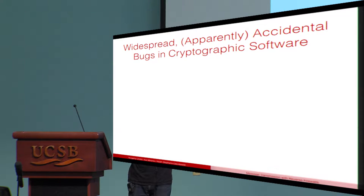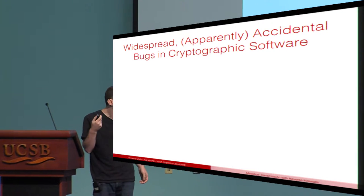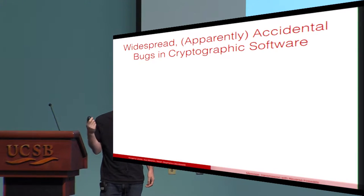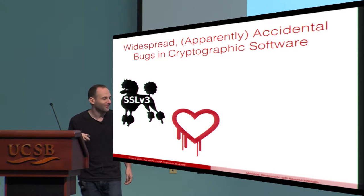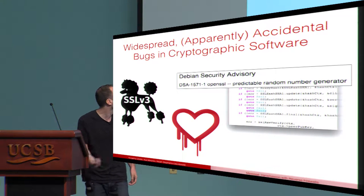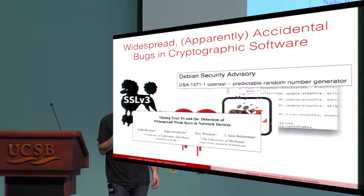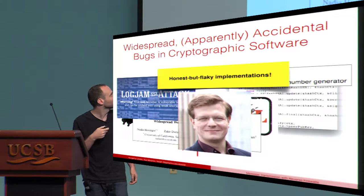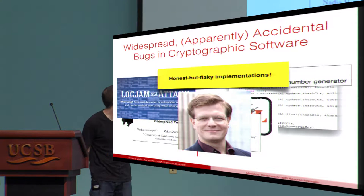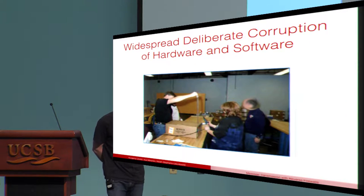This is not just a theoretical issue. We now know that cryptographic software is broken in all sorts of ways. Perhaps the most common way is simply that there are bugs everywhere — apparently accidental bugs all over cryptographic software. I'll flash the logos of things you've seen before: Heartbleed, the POODLE bug, Apple's goto fail, et cetera. Those of you who saw the talk last night know this as honest but flaky implementations.